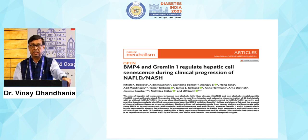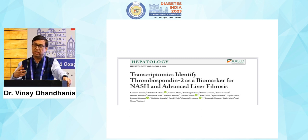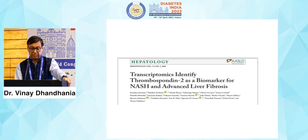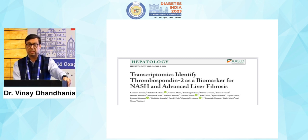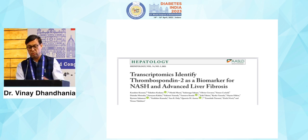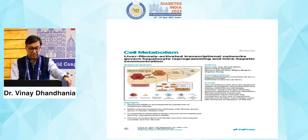Transcriptomics is another important study where RNA coding is analyzed — for example, thrombospondin-2 has been identified as a biomarker for NASH and advanced liver fibrosis. These are important recent publications driven by the increasing prevalence and incidence of NASH.